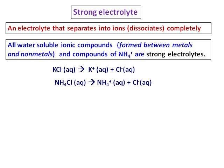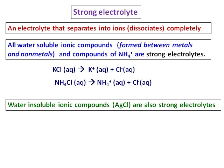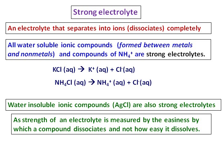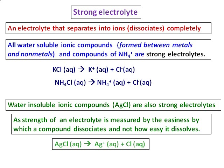What about water-soluble ionic compounds like silver chloride? The strength of an electrolyte is measured by the ease with which a compound dissociates, not by how easily it dissolves. So in aqueous solution, AgCl can produce Ag+ and Cl- ions, and hence insoluble ionic compounds are also strong electrolytes.